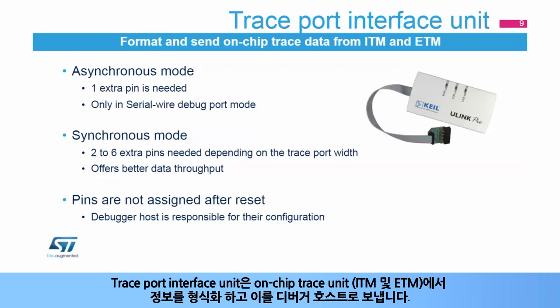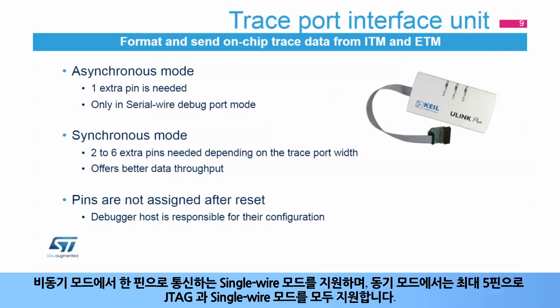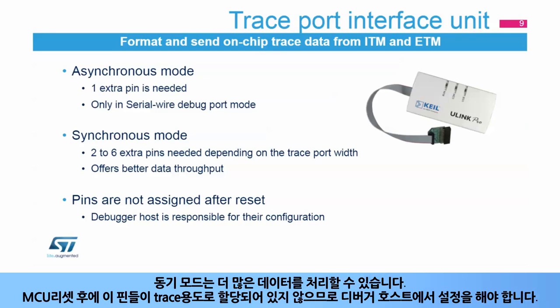The trace port interface unit formats information from the on-chip trace units, ITM and ETM, and sends them to the debugger host. It supports asynchronous mode with one pin used for communication in single-wire mode, or synchronous mode with up to five pins working in both JTAG and single-wire modes. Synchronous mode provides better data throughput. After a device reset, these pins are not assigned and must be configured by the debugger host.